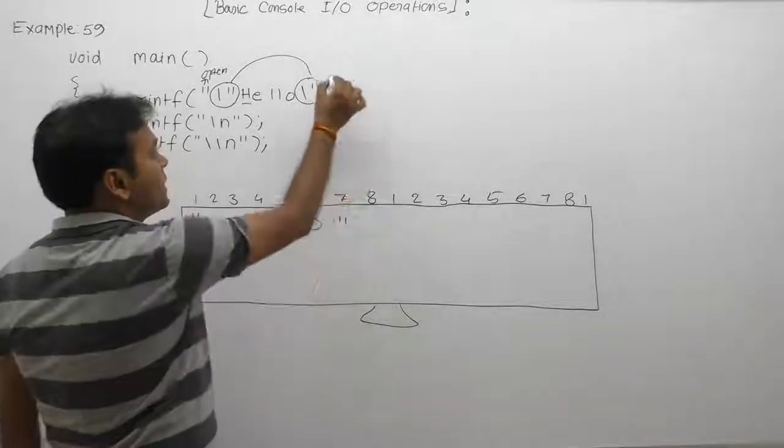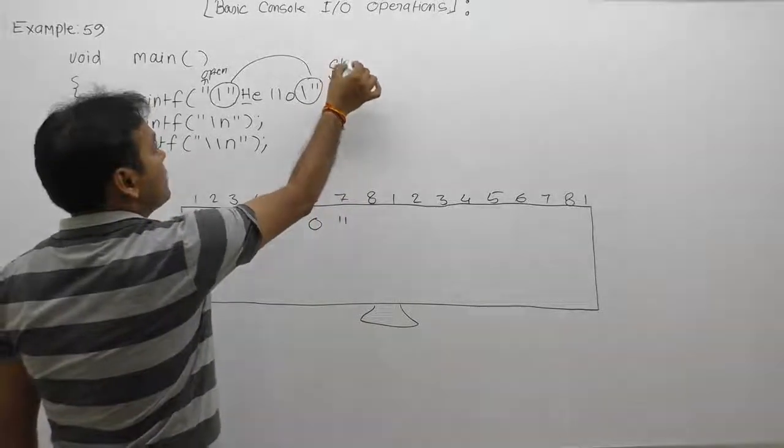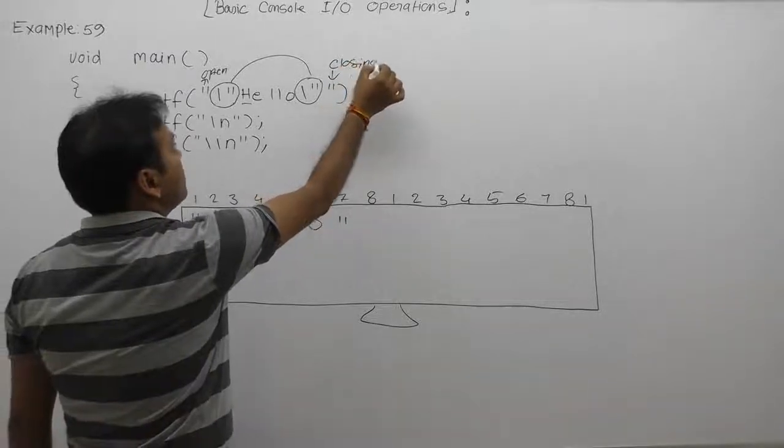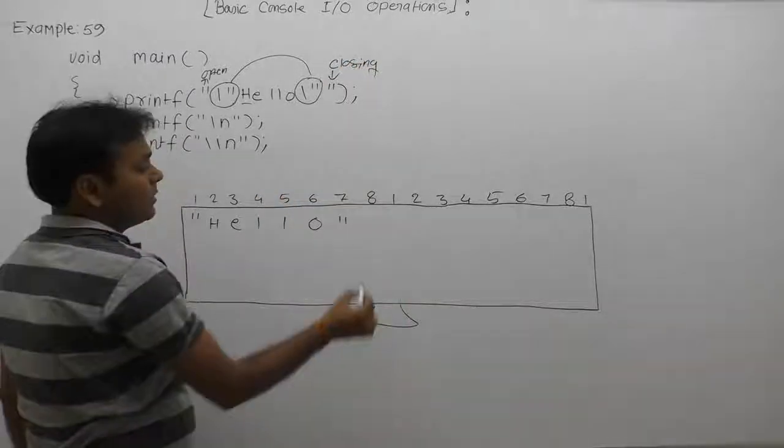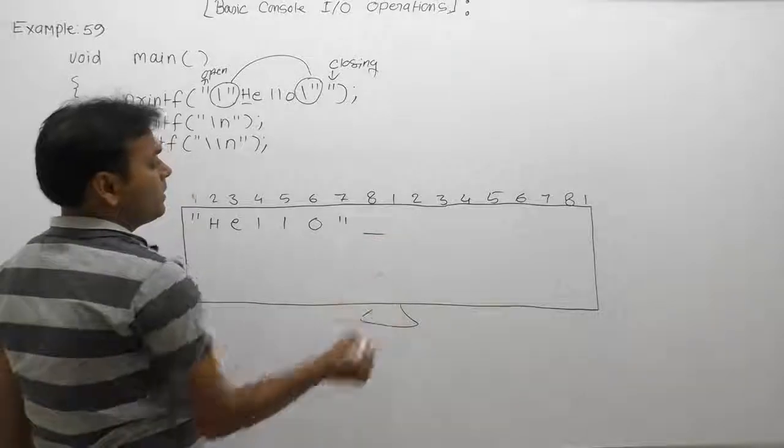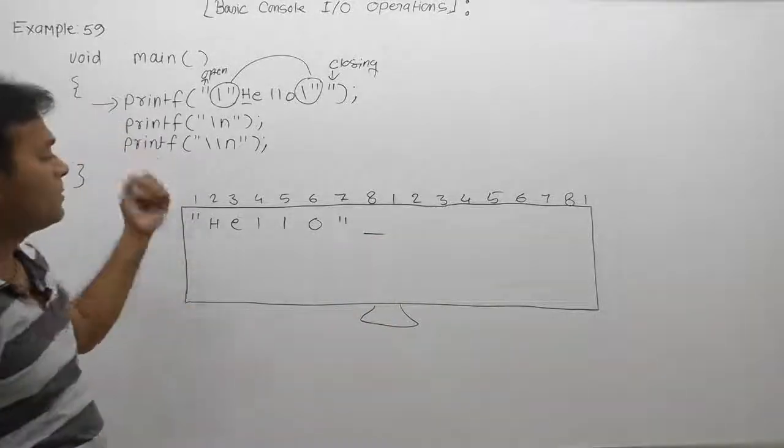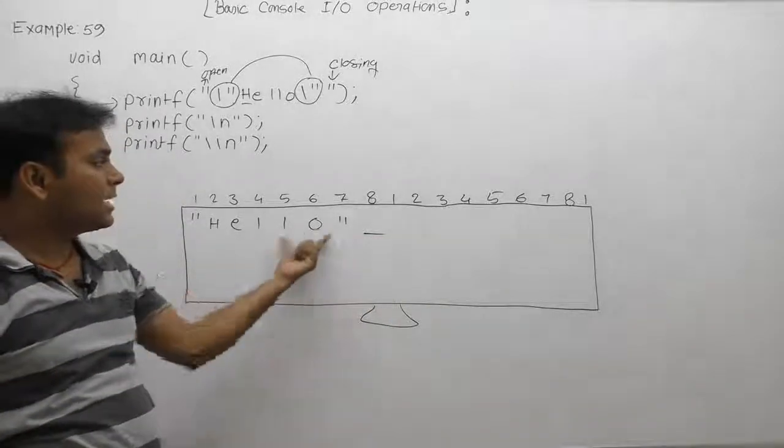Next one, this one is a string closing, therefore string is closed from that place. Then cursor will be available on the eighth position. According to first print tab, it will print hello message inside double quotes.